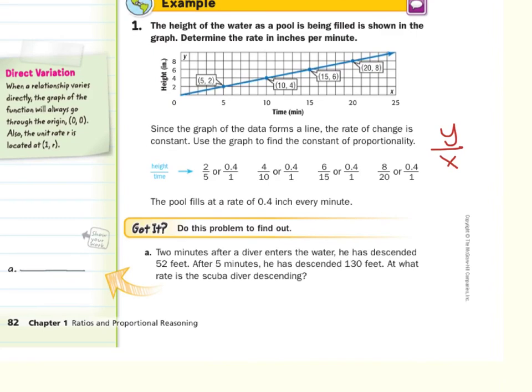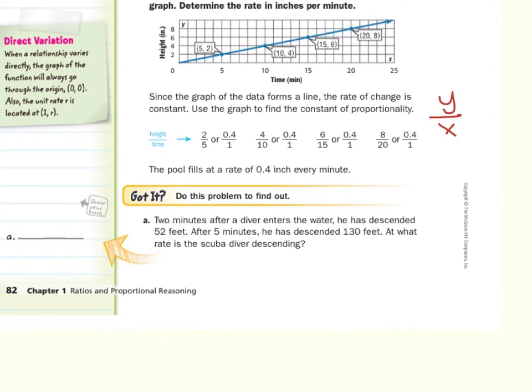Got it? Let's find out. Two minutes after a diver enters the water, he descended 52 feet. After 5 minutes, he has descended 130 feet. At what rate is the scuba diver descending? For this question, we can take a look at our 52 over 2 minutes, which simplifies to 26 over 1. And we can do 130 over 5 minutes, which also simplifies into 26 over 1. So we can say that he is descending 26 feet per minute.